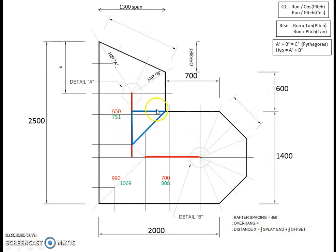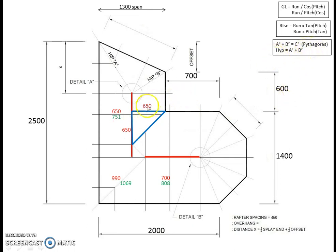How do we work out the size of this triangle? This pretend rafter I've put in there — we actually already know the run of that rafter because it equals the run on the other side. Being a standard 45 degree valley, whatever the run is there is the same distance along here. So 650 along there, 650 along there. We use Pythagoras again — square both of them, add them together, get the square root — and we end up with a run of 919 down the valley.